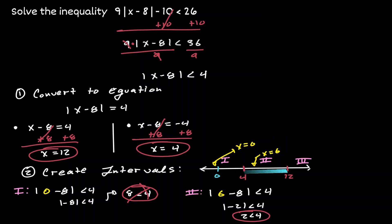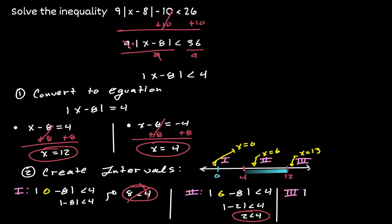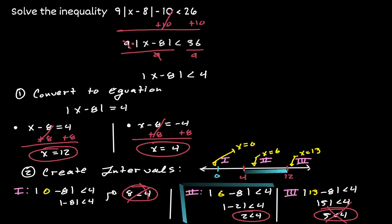Now let's test the third interval. Let's choose a number in the interval from 12 to positive infinity — I'm going to choose x equals 13 — and plug it into the simplified inequality. Inside the absolute value we get 5, and the absolute value of 5 is just 5. Is 5 less than 4? Definitely not. So we will not consider the third interval as part of our solution. The only interval with a true statement is the second one, where x is between 4 and 12.